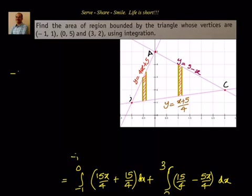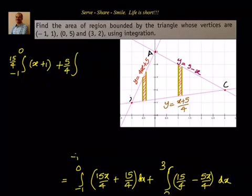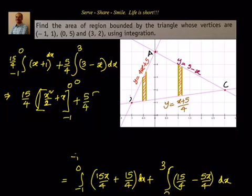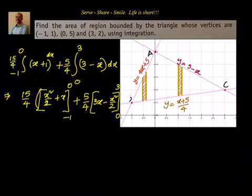We can factor these: (15/4) times integral from -1 to 0 of (x + 1) dx, plus (5/4) times integral from 0 to 3 of (3 - x) dx. Integrating: (15/4)[x²/2 + x] from -1 to 0, plus (5/4)[3x - x²/2] from 0 to 3.